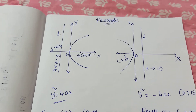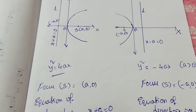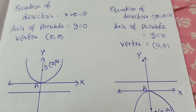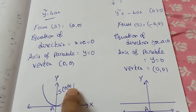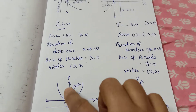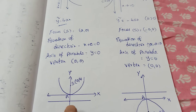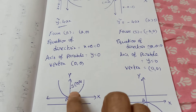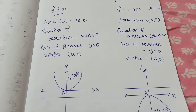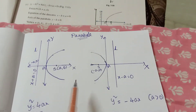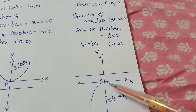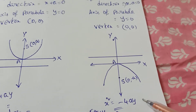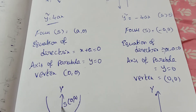Next, x squared equals 4ay. The x-axis is parallel here. The curve opens upward. For the downward curve, x squared equals minus 4ay. Now focusing on the y-axis for these forms.